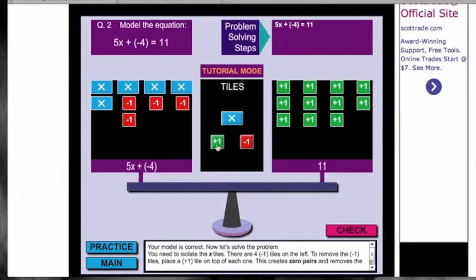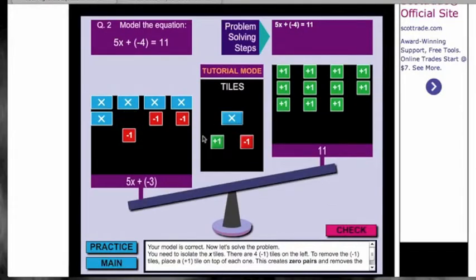Now we're going to get the X's by themselves. To do that we will need to add a positive one for every negative one to cancel those out. And what we do to one side we must do to the other.